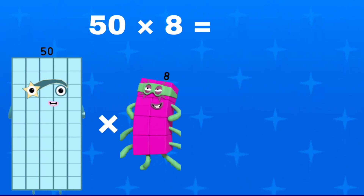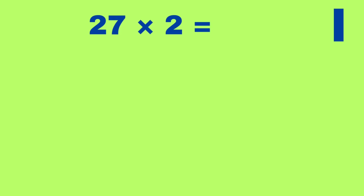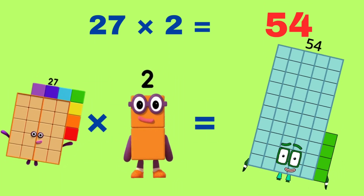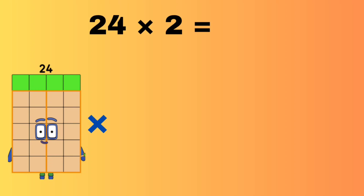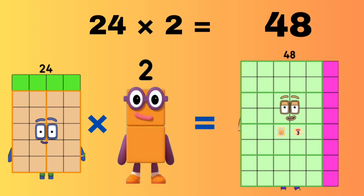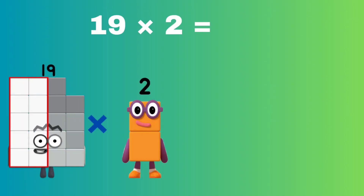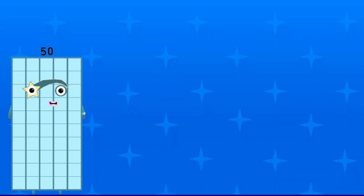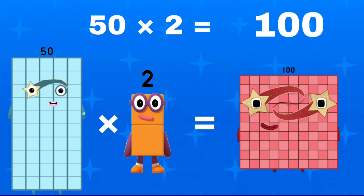50 multiplied by 8 equals 400. 27 multiplied by 2 equals 54. 24 multiplied by 2 equals 48. 19 multiplied by 2 equals 38. 50 multiplied by 2 equals 100.